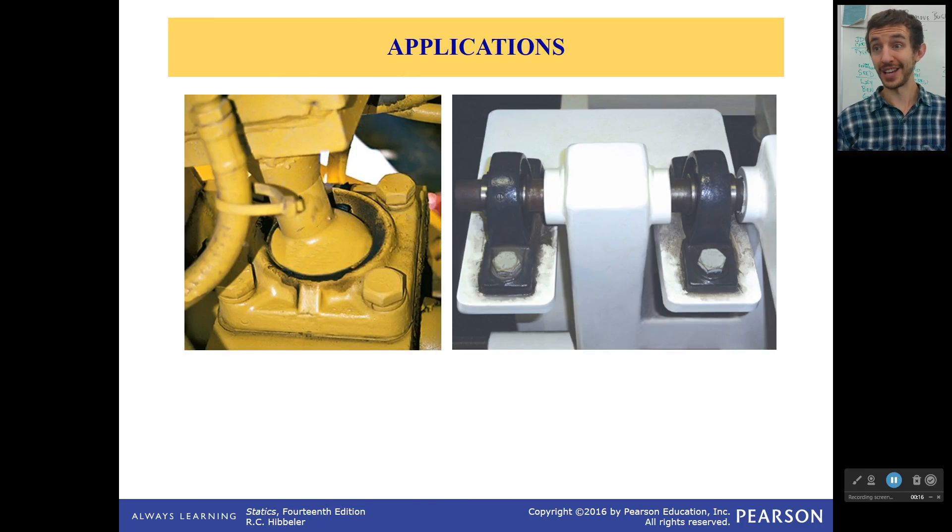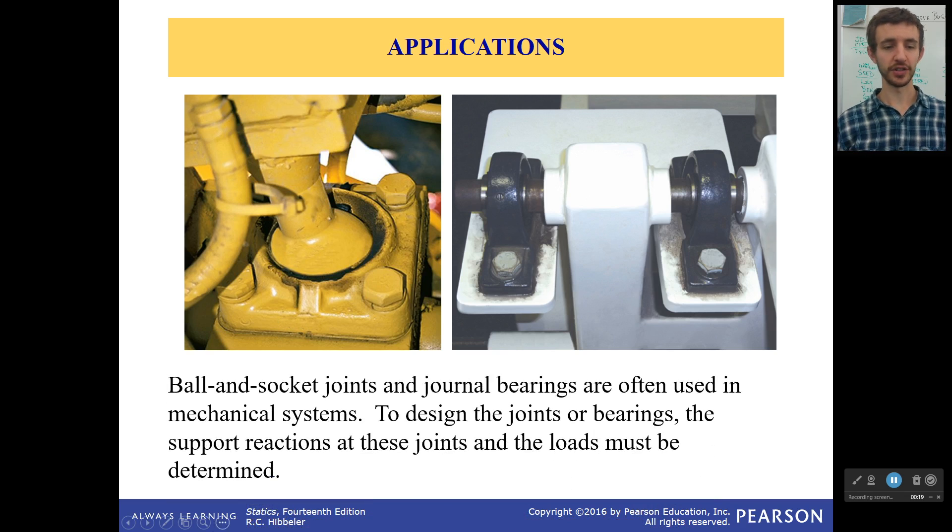So first off, why do we care? Well, look at this. We have a ball and socket joint right here. Let me switch my laser pointer because I like it better. Ball and socket joint right here. We have some journal bearings right here. Now these are often used in mechanical systems. However, we have to understand how does this constrain my part? What does it actually hold back? What does it allow? We need to know that so we can figure out what the loads are on these journal bearings and on the things that are being held by them. Are they strong enough? Can they actually withstand these forces? If the answer is no, well, you might want to use something different.